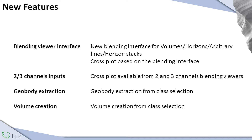The idea in this interface is to blend some objects. As objects, we can blend volumes, horizons, arbitrary lines, and horizon stacks. Once we blend those objects, we can create the crossplot. We can blend two objects or three objects, depending on our needs. And once we have the crossplot, we can extract geobodies or volumes.